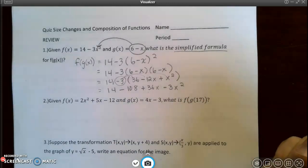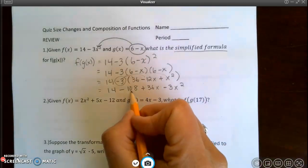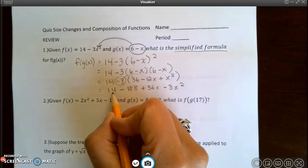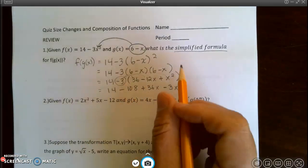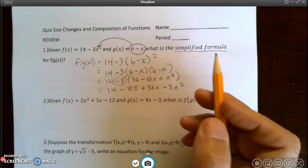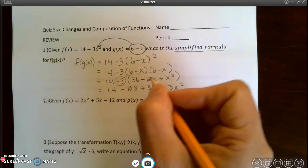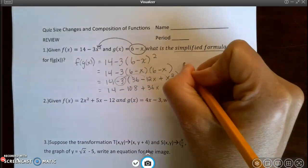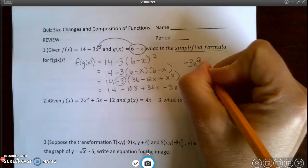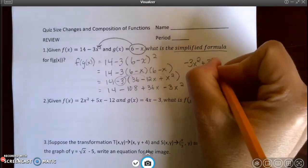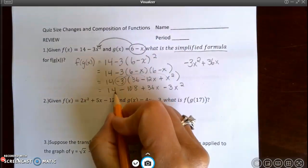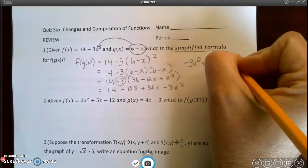So negative 3x squared, then the only like terms I have to get together is the negative 108 and the 14. And because it's a simplified formula, I want to put it in descending order. So my final answer would be negative 3x squared plus 36x, and 14 minus 108 is negative 94.